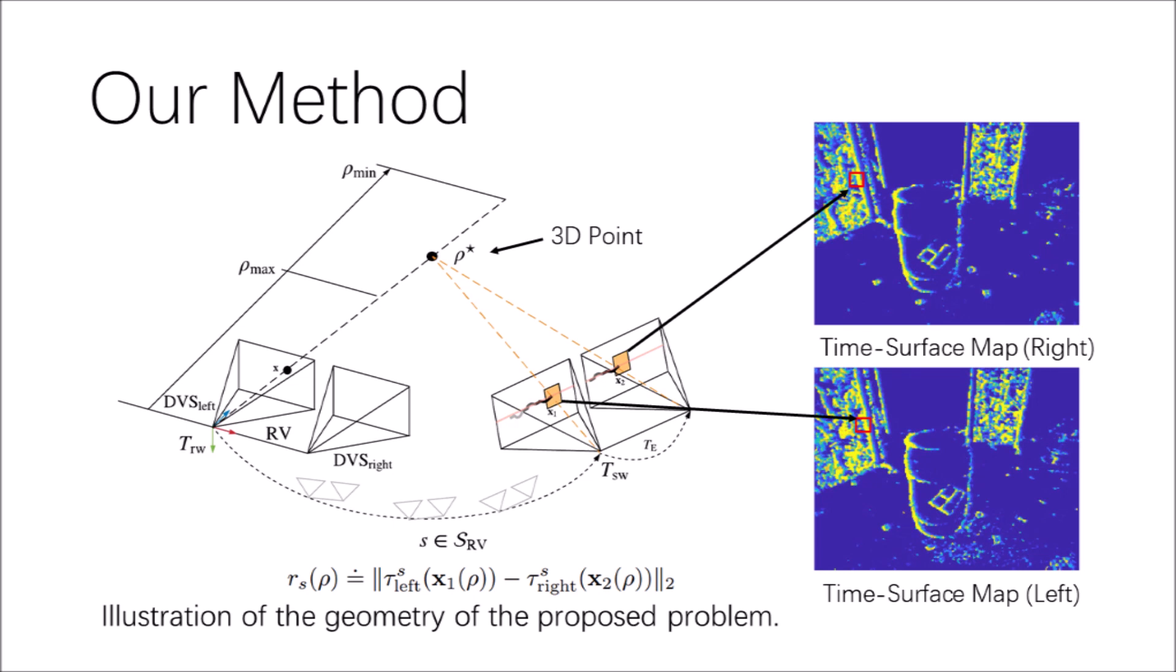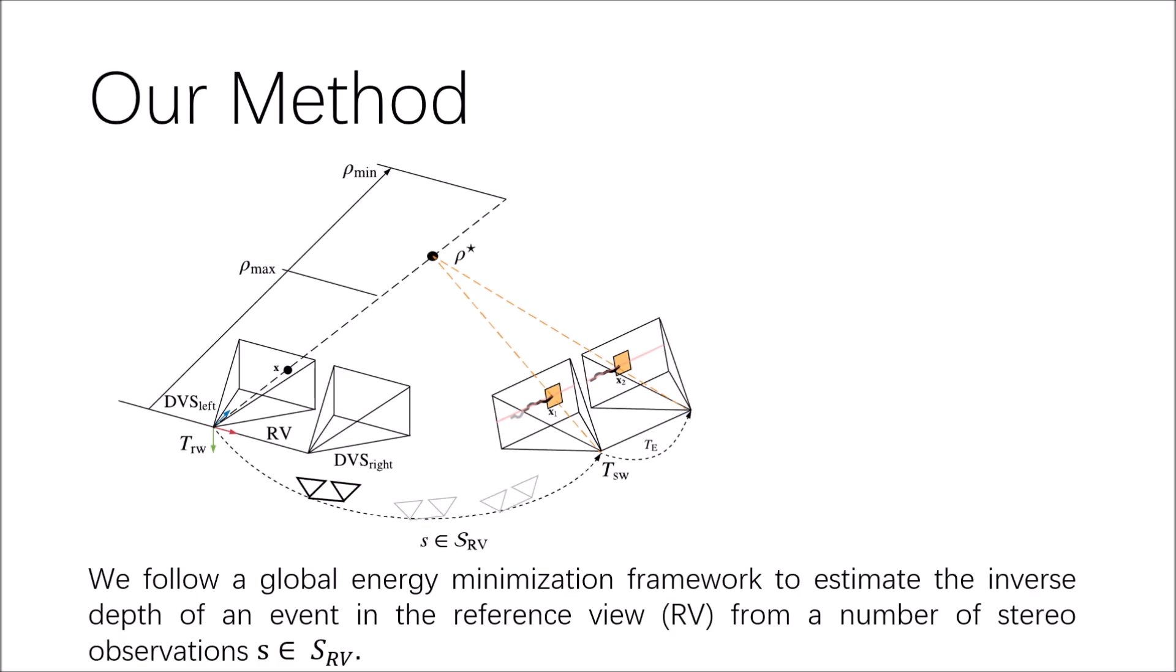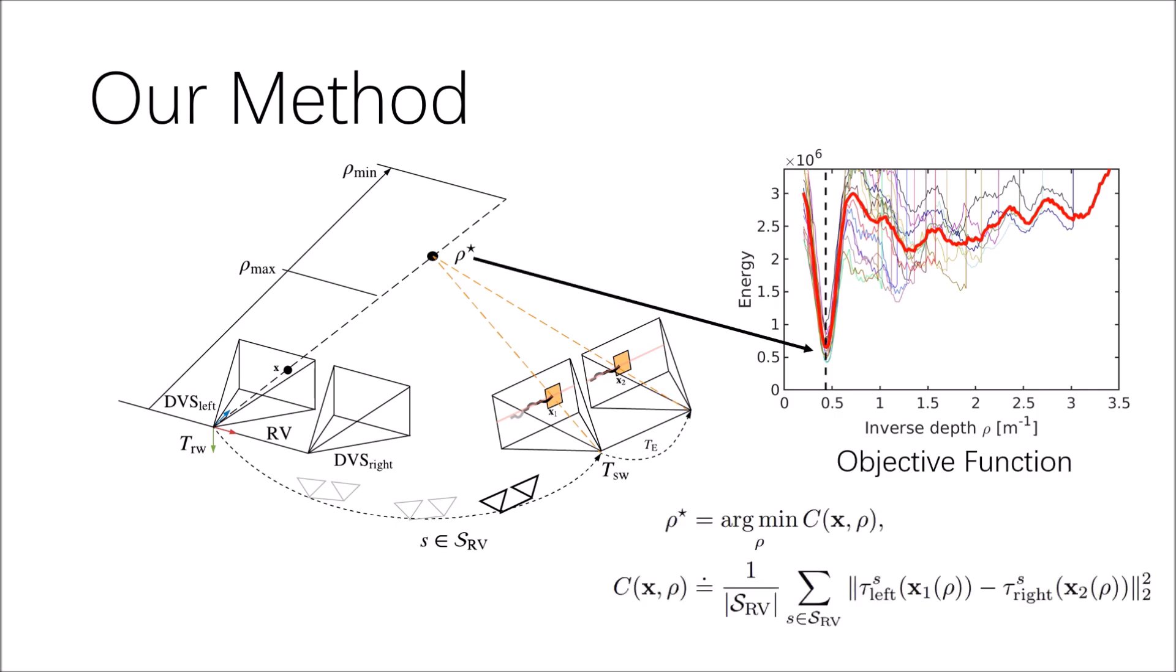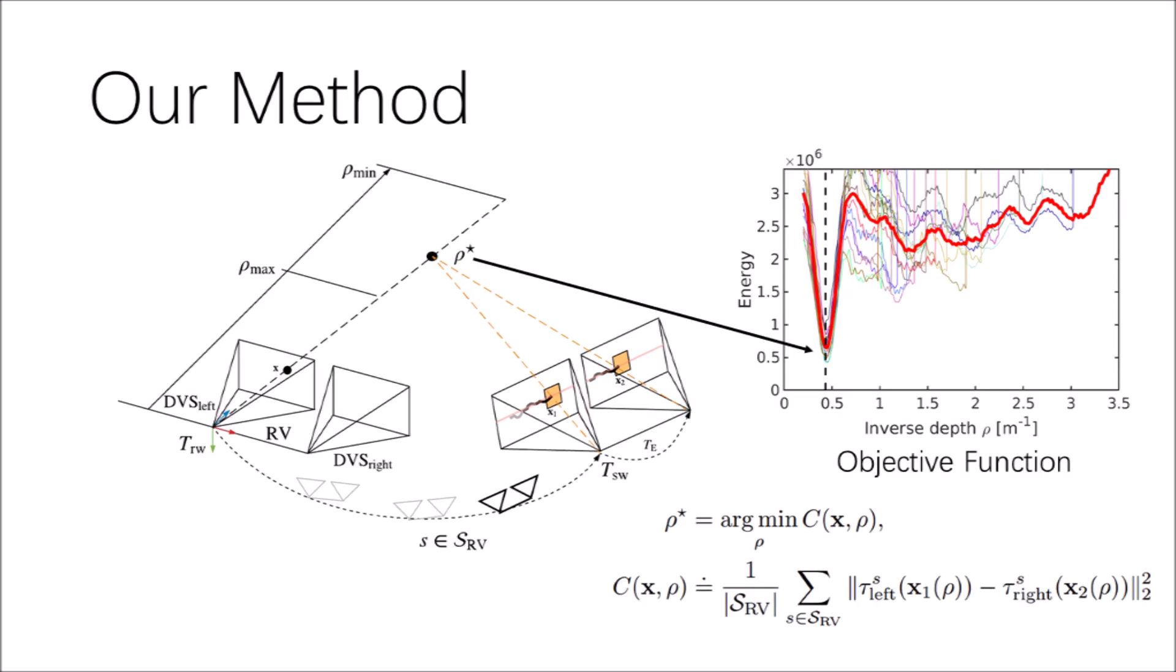Due to signal latency and jitter effects, the stereo-temporal consistency does not strictly hold at the pixel level. Therefore, we define our stereo-temporal consistency by aggregating measurements over spatial-temporal neighborhoods rather than comparing the event timestamps at two individual pixels.